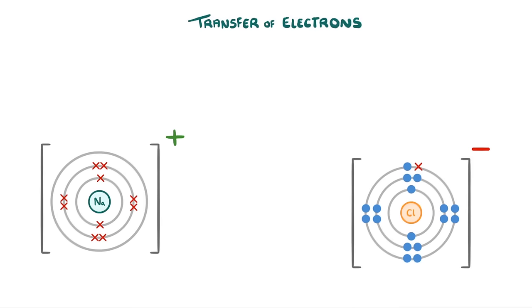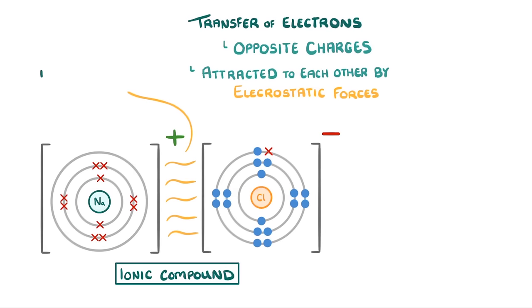The important bit here is that the two ions have opposite charges so they'll be attracted to each other by electrostatic forces to form an ionic compound. We call this force an ionic bond and it's really strong similar in strength to covalent bonds which we cover in another video.